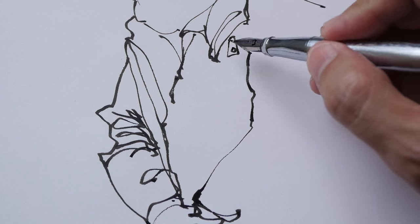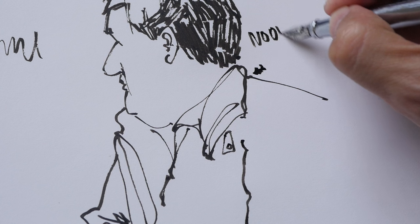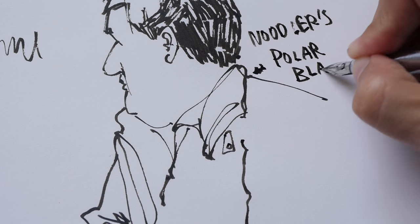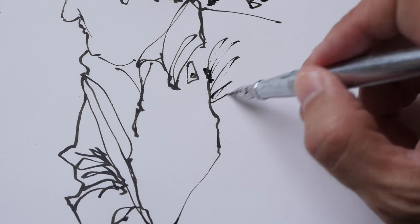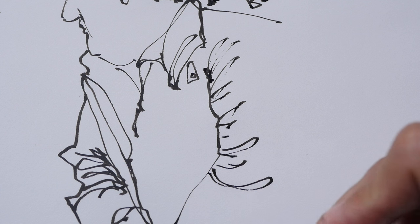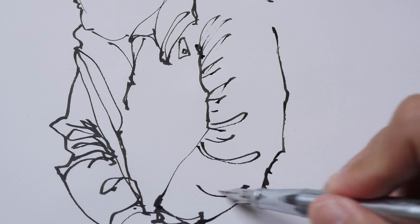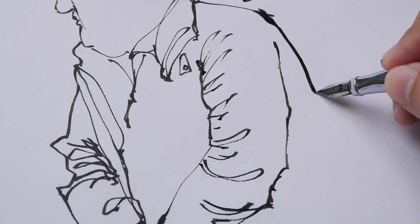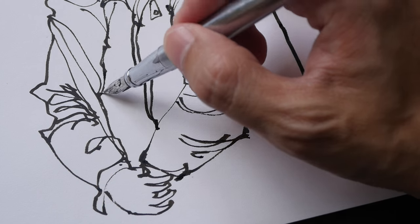The ink—what ink am I using? This is Noodler's Polar Black. It's not waterproof, so I will not use this with watercolor. But because the pen puts out quite a lot of ink, if I want to use watercolor on it, I would wait for the ink to dry, and I would use the Bulletproof Black instead of Polar Black. If I want a thick line for the back of the guy, I can do so. It's really a very fun pen to use.